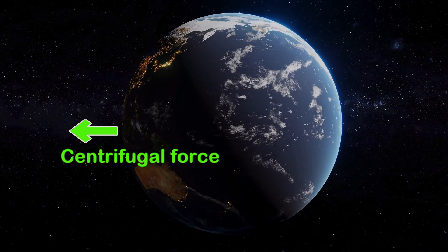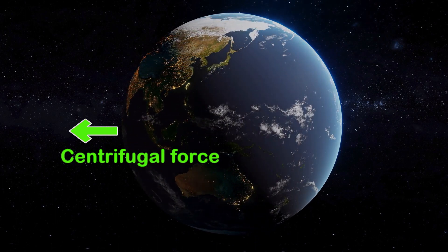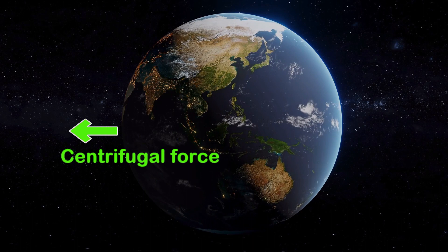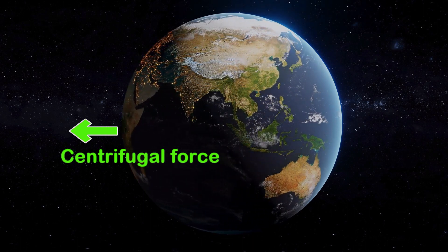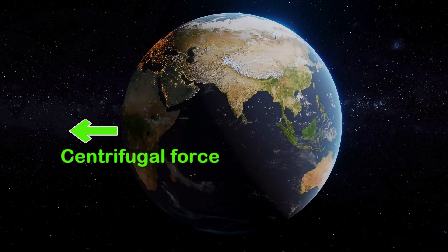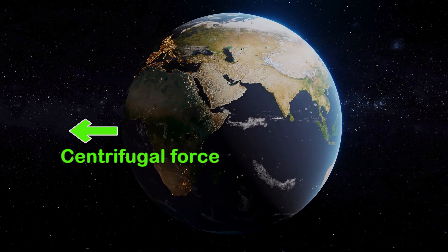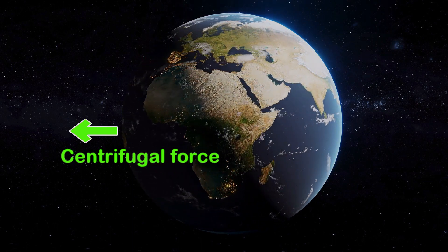As the Earth spins, the equator is moving. Since the equator is far away from the rotational axis, it has a lot of centrifugal force. In contrast, the poles are not moving, so they have zero centrifugal force.